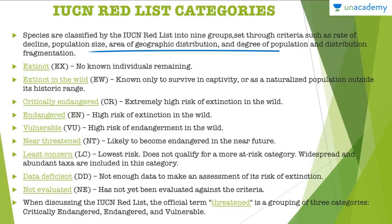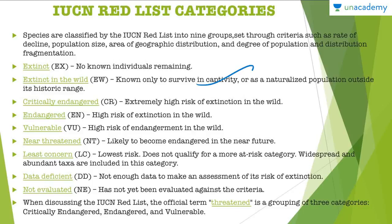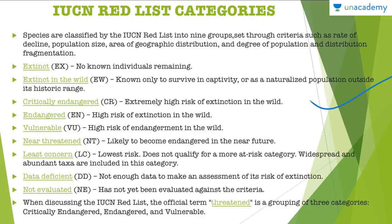The Red List classifies species into nine groups set through criteria such as rate of decline, population size attributes, and area of geographic distribution. The first category is Extinct — no known individuals remaining; the last organism has died. The second is Extinct in the Wild — known only to survive in captivity or as naturalized populations outside its historic range. So perhaps in zoological parks members survive, but in the natural wild habitat, no surviving member remains.